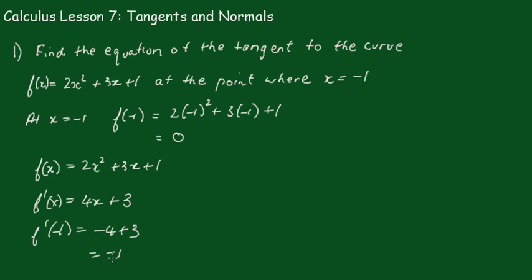So we have our gradient, we have a point, now using the formula y - y₁ = m(x - x₁). We get y - 0 = -1(x + 1) which gives you y = -x - 1 or in general form x + y + 1 = 0.